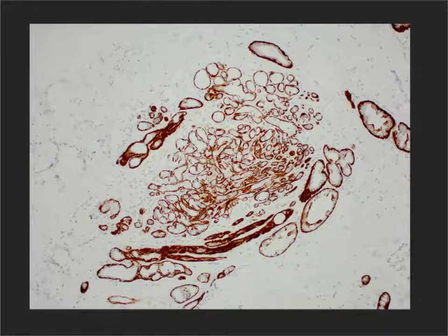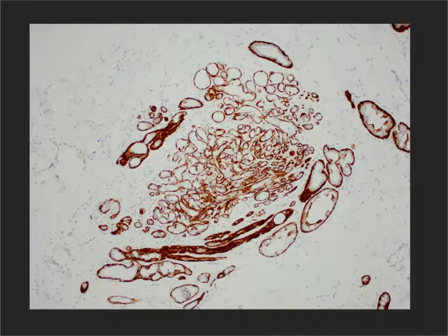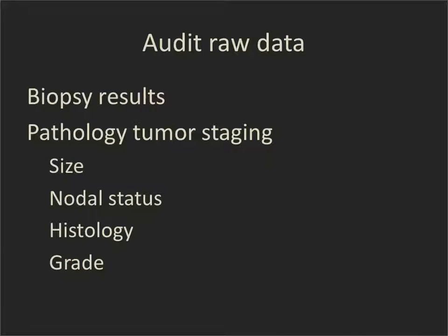As part of the raw data, pathology results are recorded and must be linked to the remainder of the patient's data. This includes the pathology tumor staging, size, nodal status, histology, and grade of the tumor.